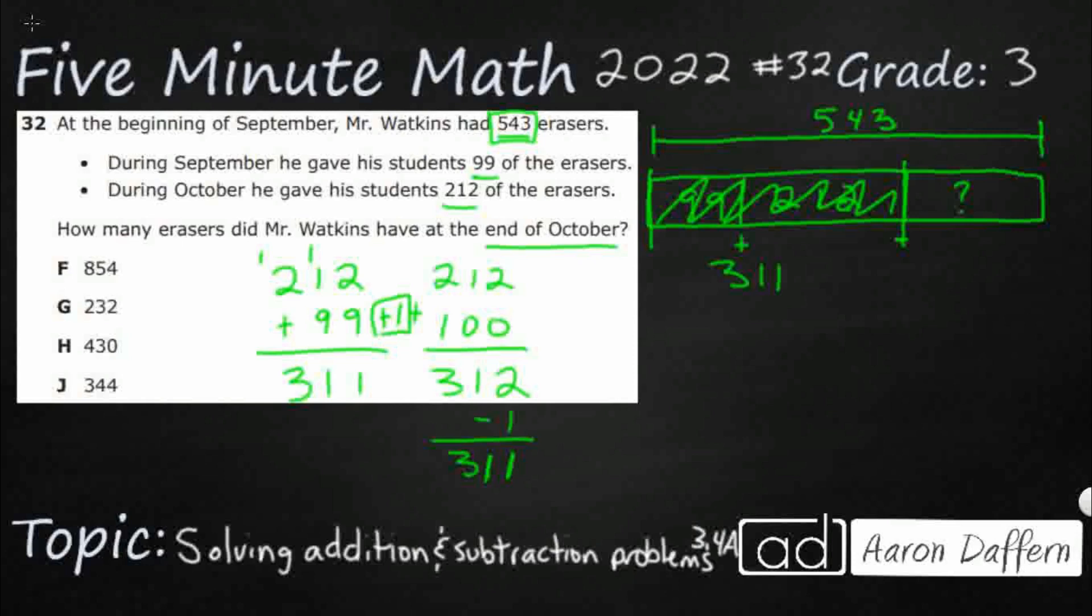And obviously, that's not one of our answer choices, because we're not looking for how much he gave away. We're looking for how much he had at the end of October. But now, we've got this. Look at this. 311 plus an unknown number is going to make 543.